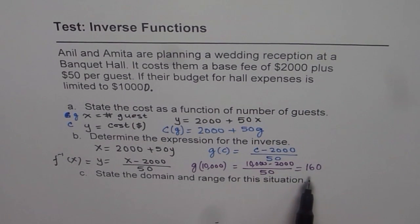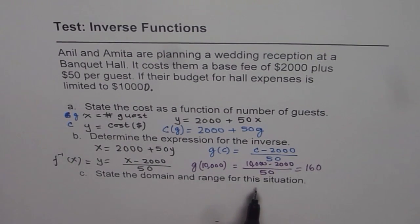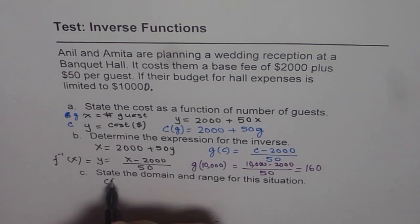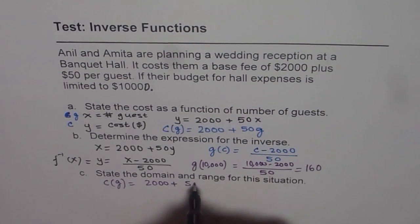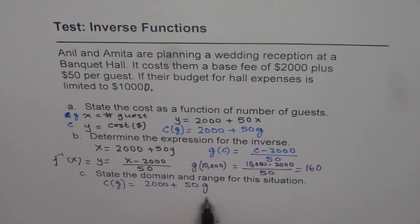So we get total guests is $160, so that will give us domain and range. Now we can write down state domain and range for this situation. We are going back to our function. The function for us is cost equals $2,000 plus $50 times guest. Domain is number of guests which can be included for the wedding reception.